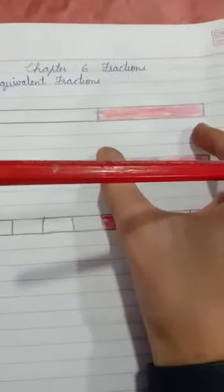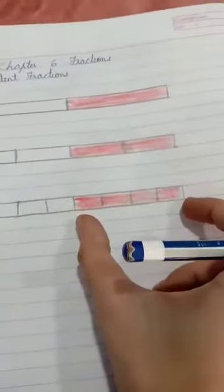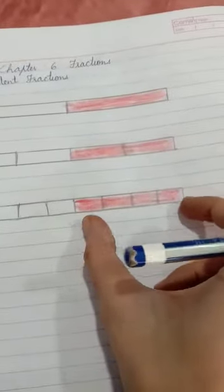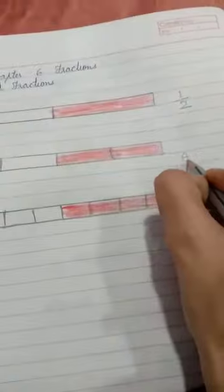Children, you can see these all are equivalent. This is one by two - out of two parts, one part is shaded. Here, out of four parts, two are shaded. Here, out of eight parts, four are shaded.